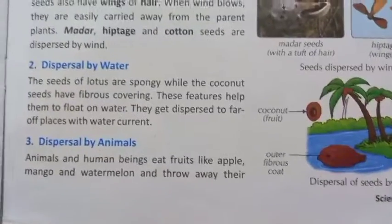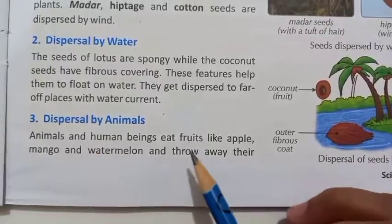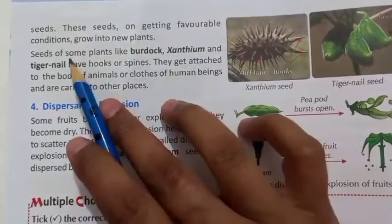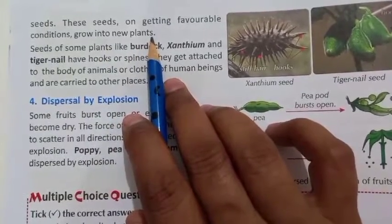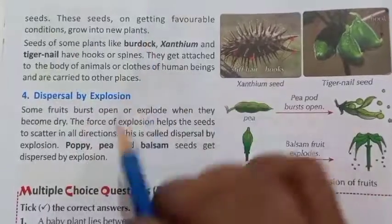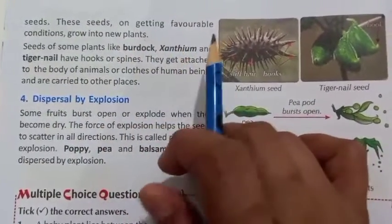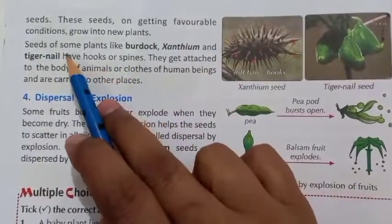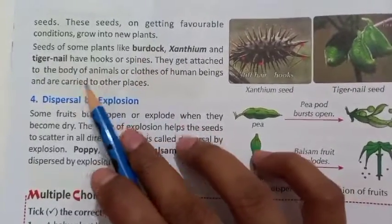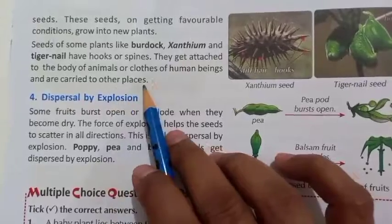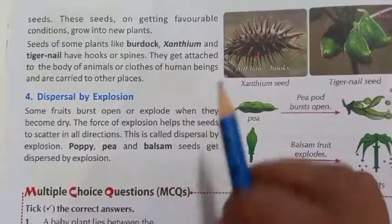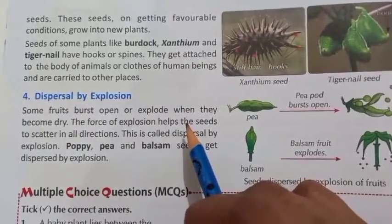Next is dispersal by animals. Animals and human beings eat fruits like apple, mango, and watermelon and throw away their seeds. These seeds, on getting favorable conditions, grow into new plants. Seeds of some plants like xanthium and those with hooks or spines get attached to the body of animals or clothes of human beings and are carried to other places.